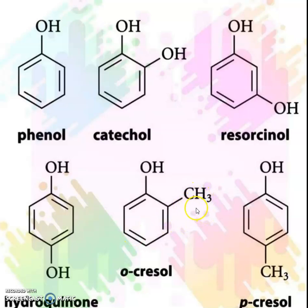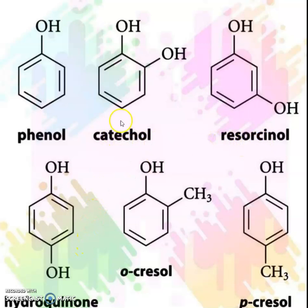Now, if you change OH with methyl, then this is ortho-cresol and this is para-cresol. So these six compounds belong to aromatic compounds and include catechol, resorcinol, and hydroquinone, differing only in the positions of the OH groups. Two functional groups means two OH groups — diol, diol, diol.